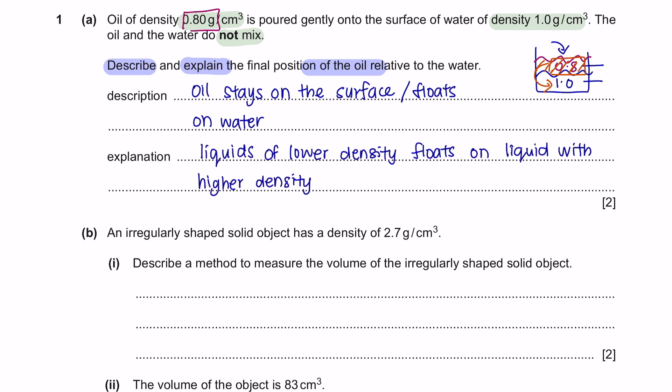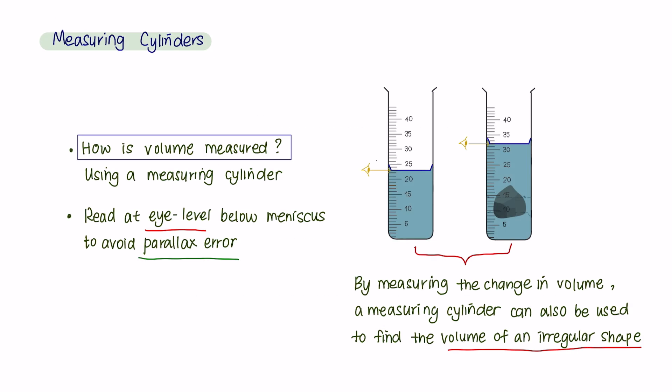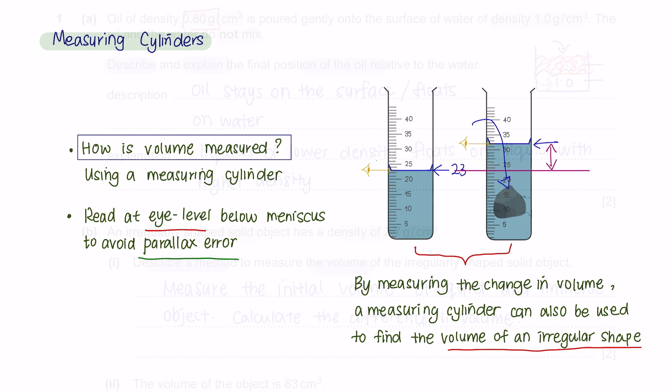Question B. An irregularly shaped solid object has a density of 2.7 grams per centimeter cube. Part 1: Describe a method to measure the volume of the irregularly shaped solid object. For an irregular object, we can place it into a measuring cylinder and measure the change of volume to get the volume of the object.